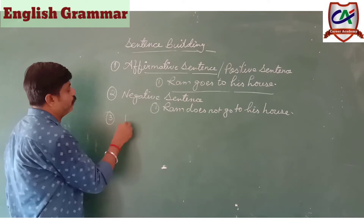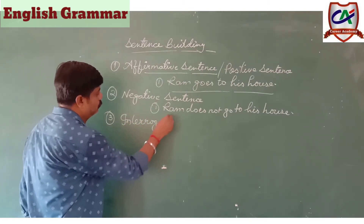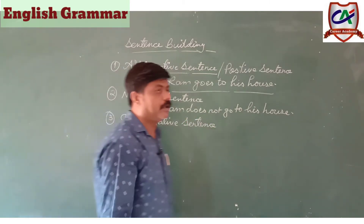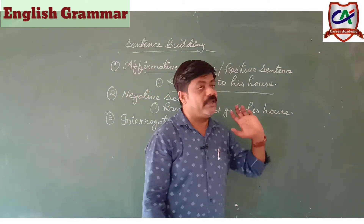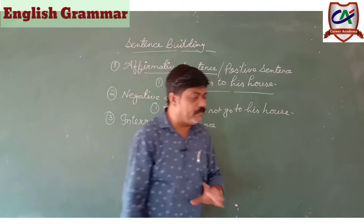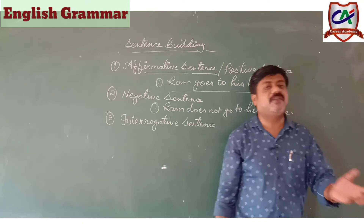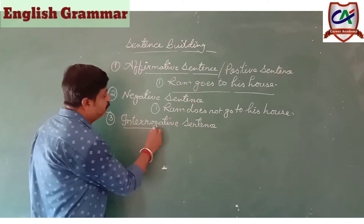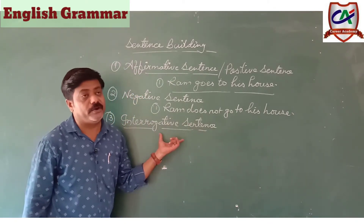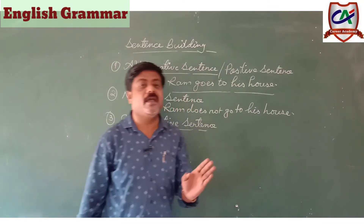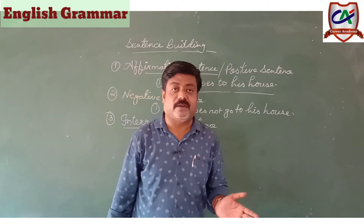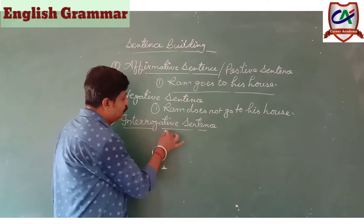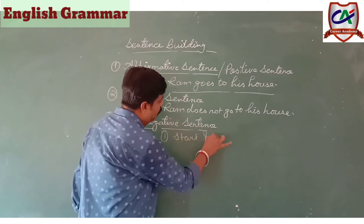Third one is Interrogative sentence. Interrogative sentence — Hindi में इसे प्रश्नवाचक वाक्य कहते हैं। इसमें प्रश्न आते हैं — आपके दिमाग में आएगा कि यह तो प्रश्न है, sentence को प्रश्न बनाना है। Interrogative sentence के according English language में दो types होते हैं: first one starts from helping word, and second starts from a WH word.